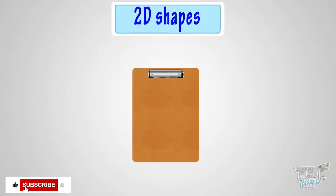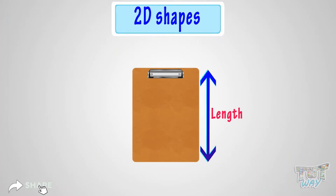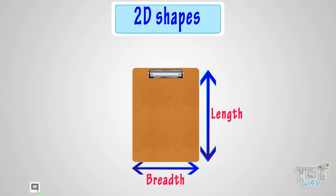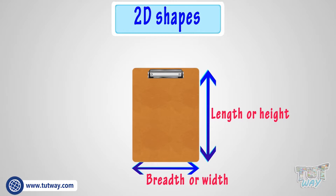2D shapes are also called flat shapes because they have exactly two dimensions: length and width, or height and width.